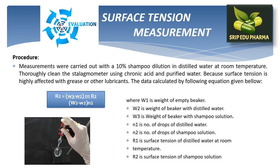The next parameter is surface tension measurement. For this, we use a stalagmometer and a 10% shampoo dilution in distilled water at room temperature. Surface tension measurement is very important because surface tension is highly affected by grease or other lubricants. The data is calculated using the following equation given in the slide.